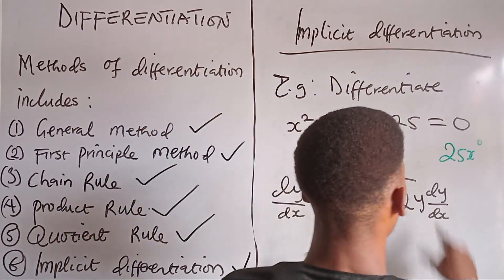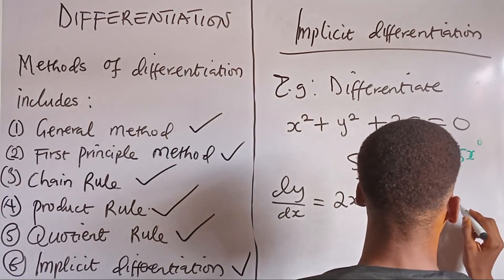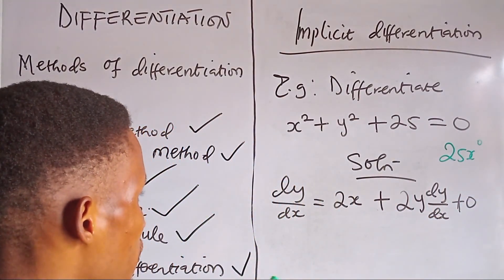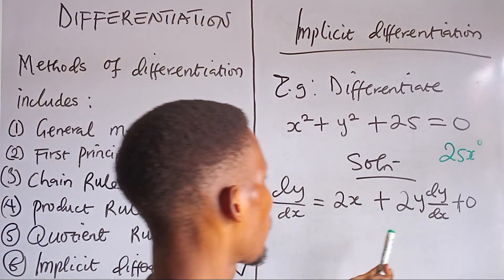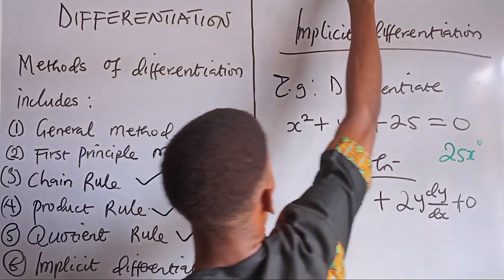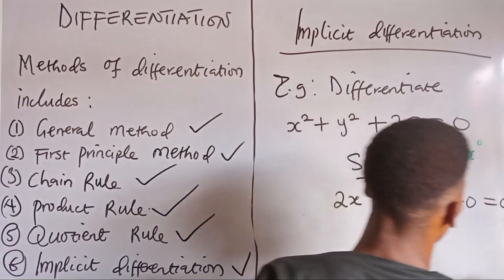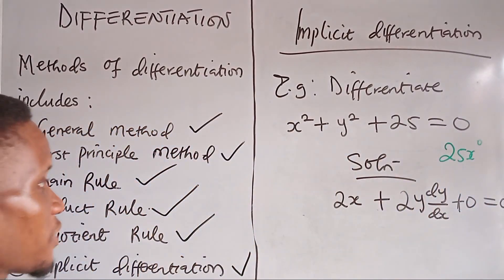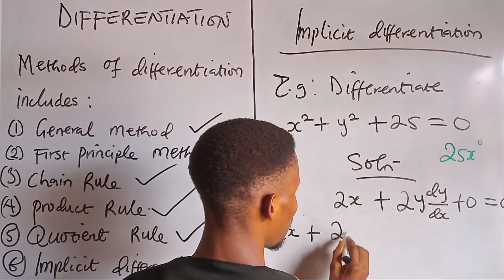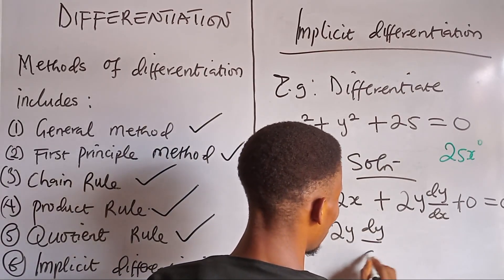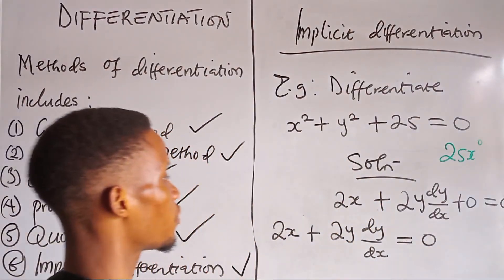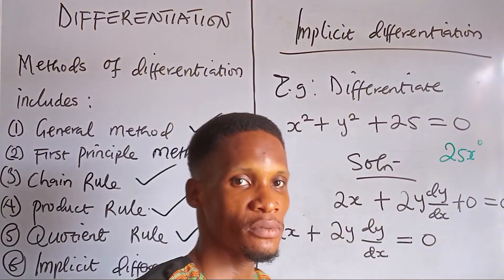So if we differentiate a constant it gives us 0. Now putting it all together, we are having: 2x plus 2y times dy/dx plus 0 equals 0. So to get our dy/dx, we make it the subject of the formula from this equation.